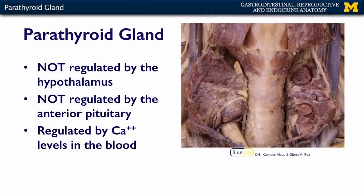The parathyroid gland is another example of a gland that is not regulated by the hypothalamus and the pituitary. The parathyroid gland is regulated by circulating levels of calcium, similar to the parafollicular cells of the thyroid gland itself. So circulating levels of calcium in the blood are going to determine whether or not the parathyroid glands are activated.